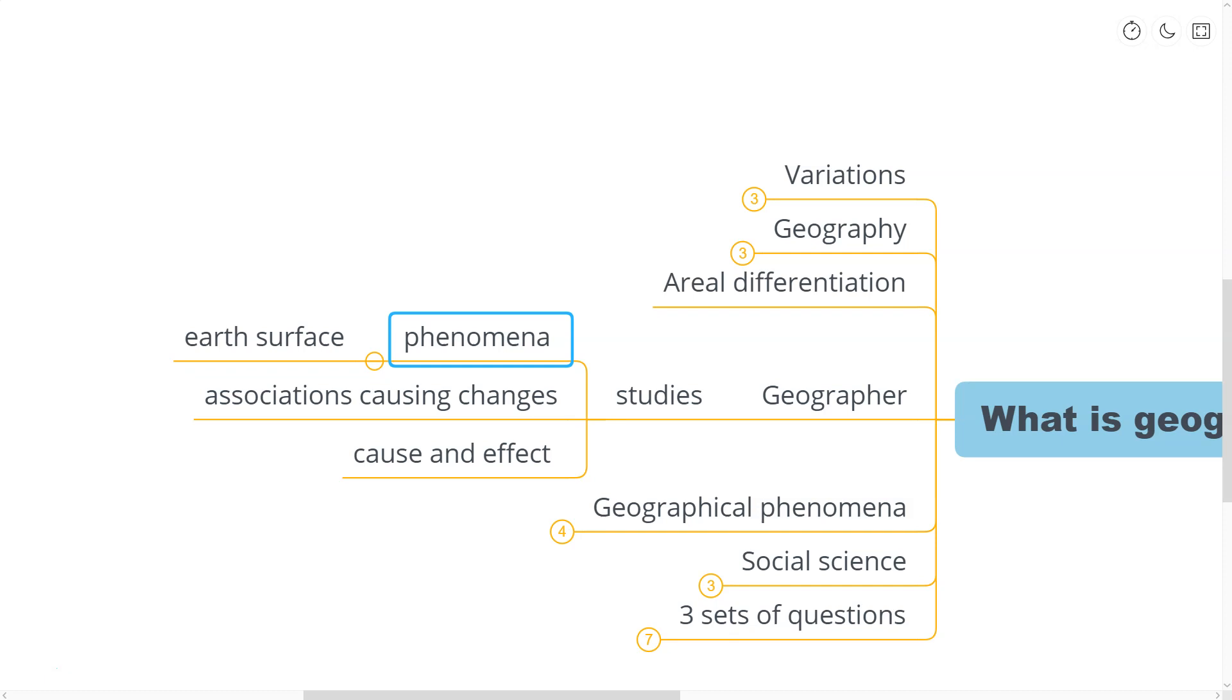To take an example, cropping patterns differ from one region to another region, one country to another country. But this variation in a cropping pattern as a phenomenon is related to variations in soils, climates, demands in the market, capacity of the farmer to invest, and technological inputs available to her or him. The concern of geography is to find out the causal relationship between any two phenomena or between more than one phenomenon.